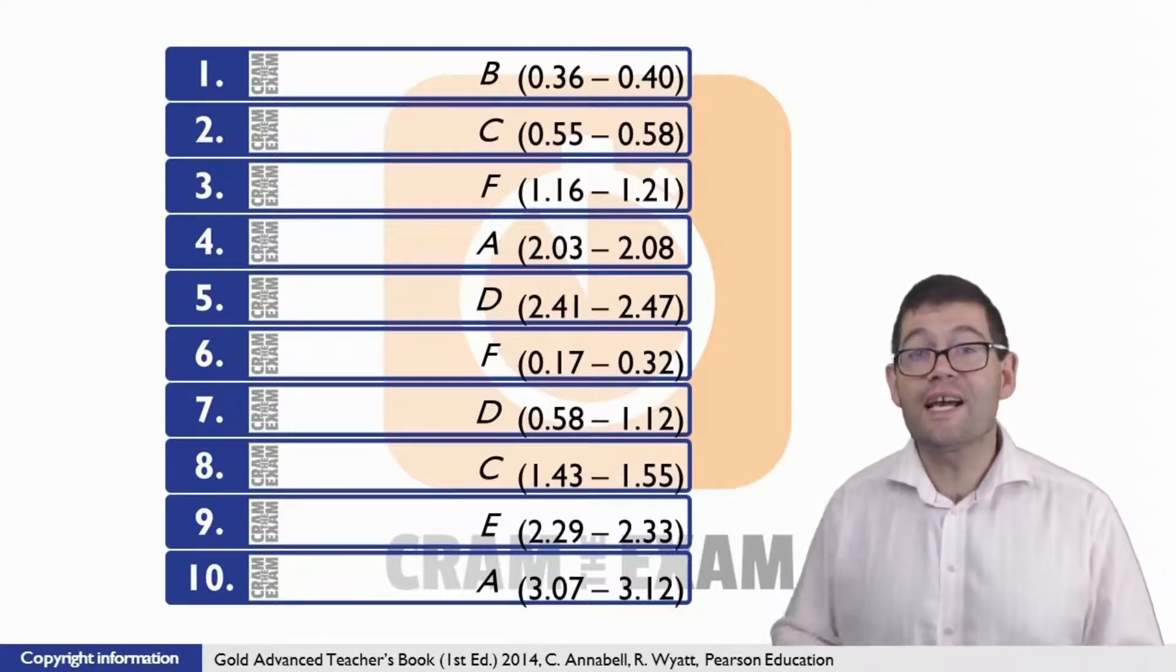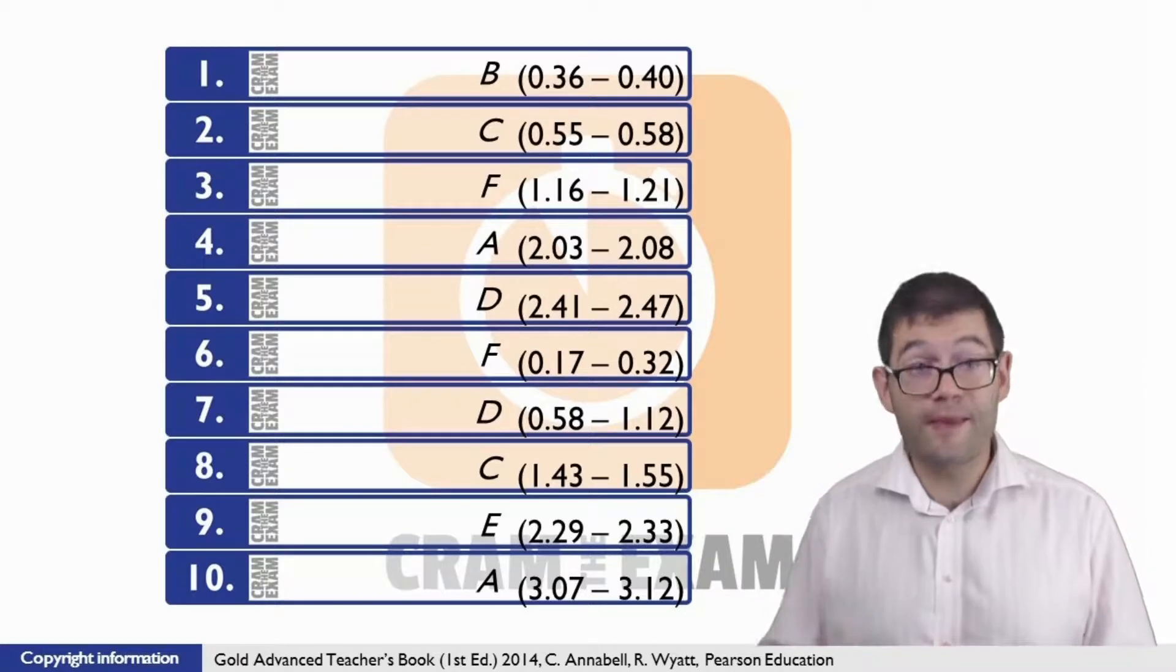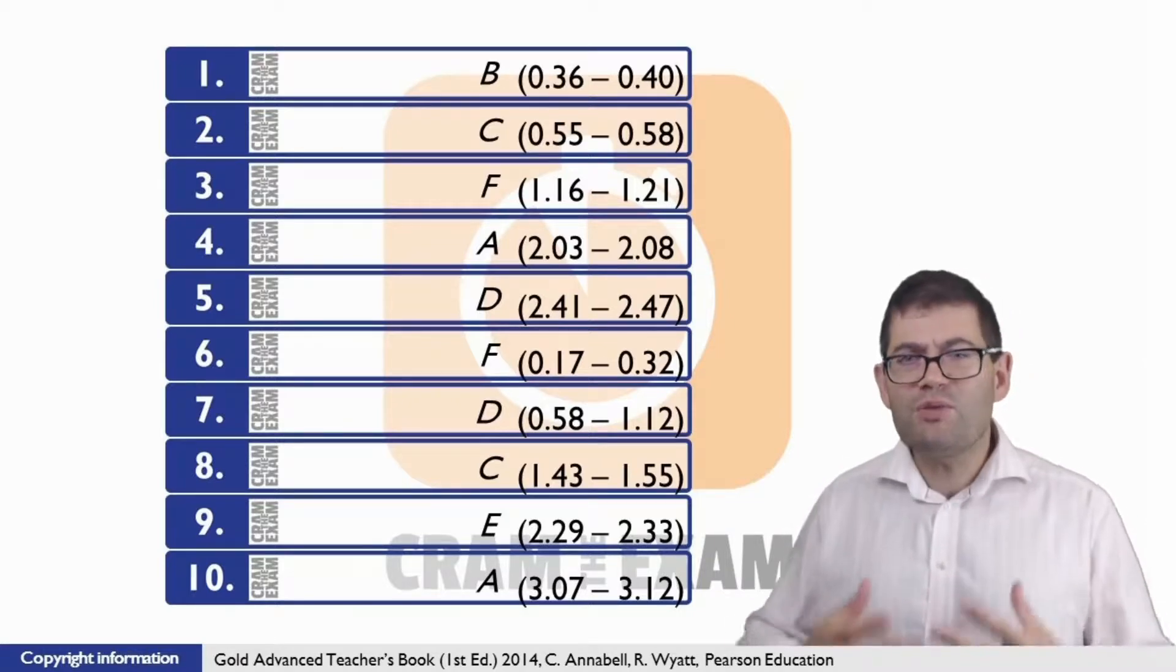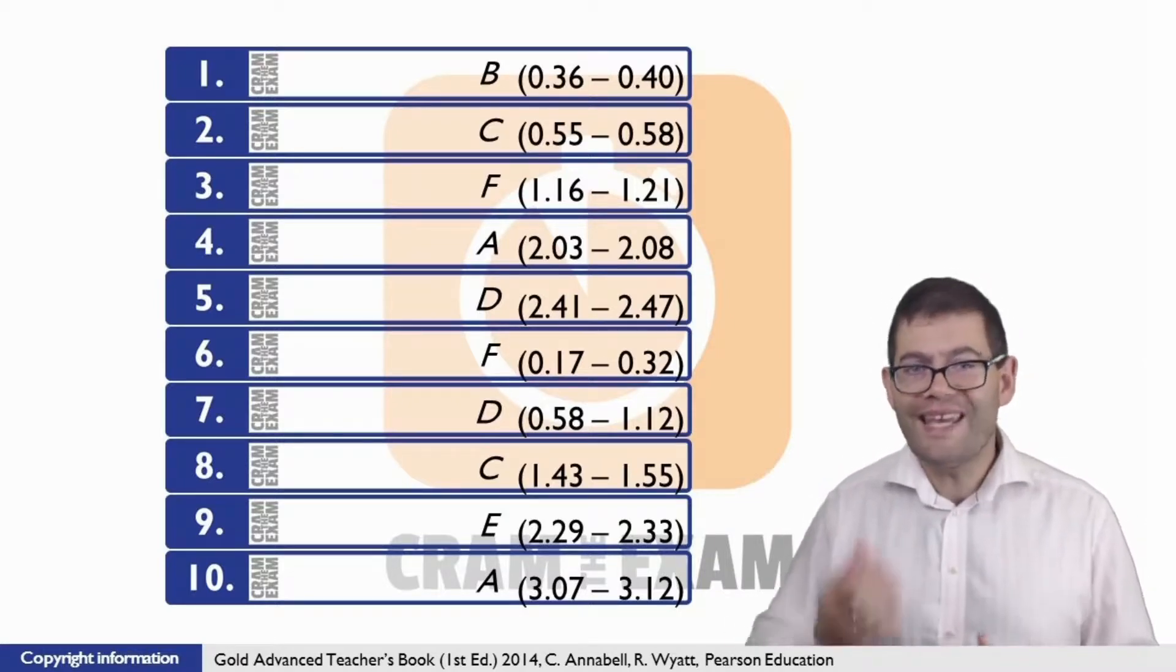For question nine, the answer is E, unhappy about the way that they were obtained, because speaker four says 'They ought to have told us what was going on, it's not ethical.'